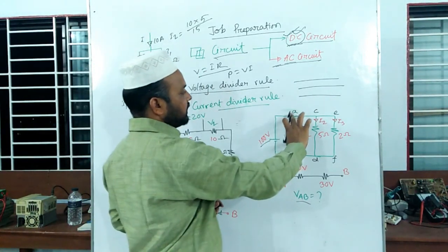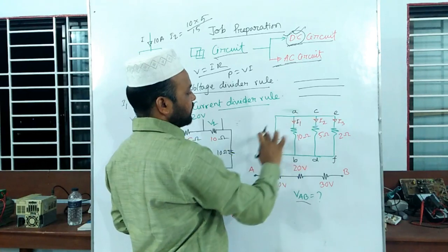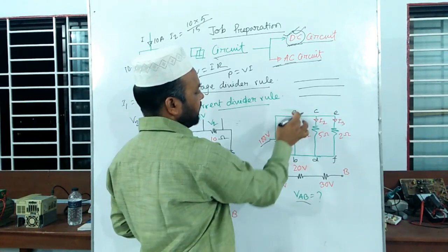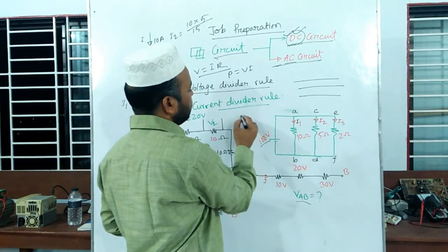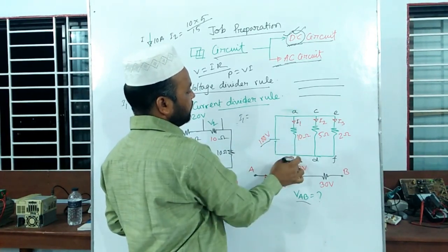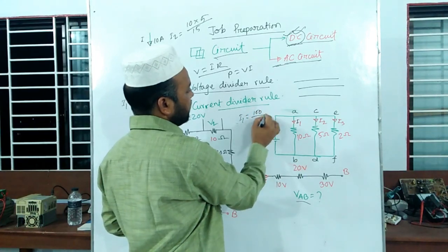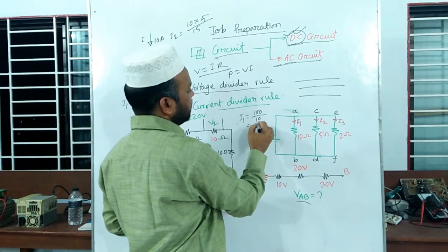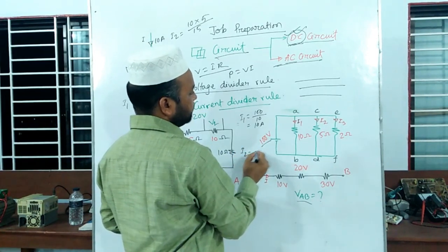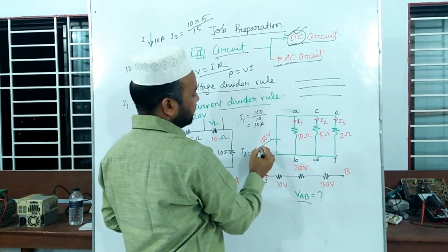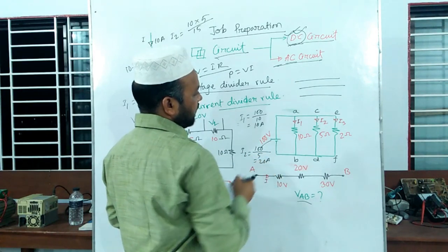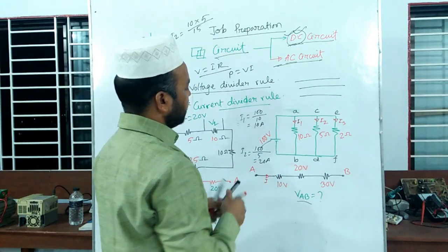In parallel, voltage is zero. AB is zero, CD is zero, EF is zero, I1 is zero. For example, A is 10A. I2 is zero, Q1 is zero. I2 will be zero.